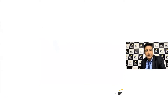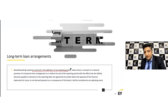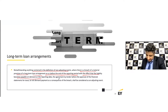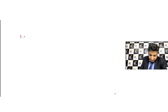When we say long-term loan arrangements, we are simply saying that no matter what is written about adjusting or non-adjusting events, in case there is a breach of a material provision of a long-term loan arrangement on or before the end of the reporting period — with the effect that the liability becomes payable on demand — an agreement by the lender before the approval of financial statements for issue to not demand payment as a consequence of the breach shall be considered as an adjusting event.